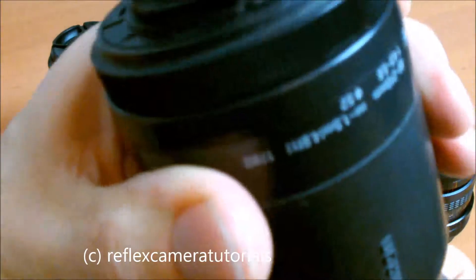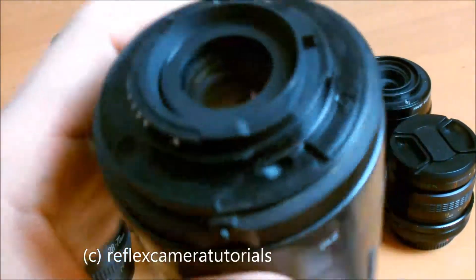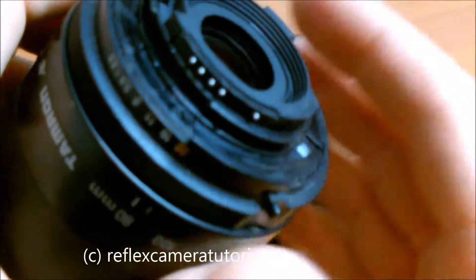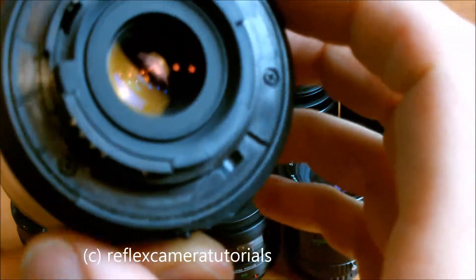We have here a zoom lens. As you can see, this one is made from plastic but the contacts are here on the outer side of the ring. These are four contacts and one separated.